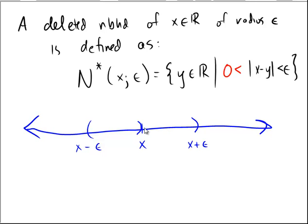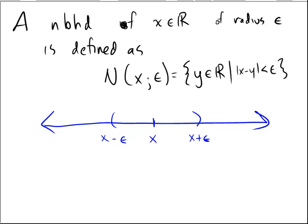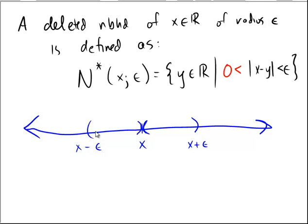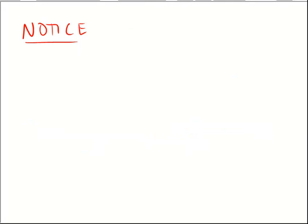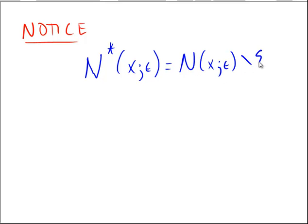So we'd have to put an interval like that, and an interval like that. So notice that the only difference between the deleted neighborhood and the actual neighborhood is that the neighborhood contains all of these points, including x. And the deleted neighborhood takes all these points, but jumps over the value x. So that means that the deleted neighborhood, n star x epsilon, is really just the actual neighborhood, but subtracted by the singleton x, because that one point has been removed.